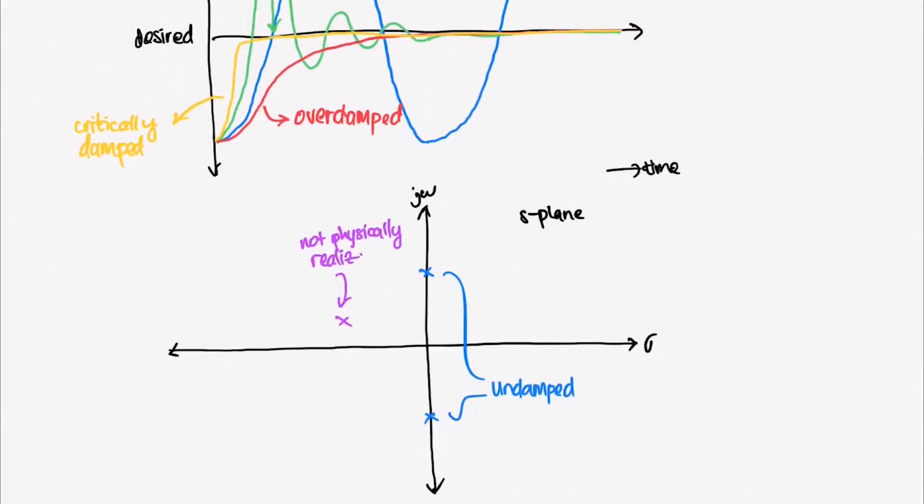Note that for a system to be physically realizable, poles that have imaginary component should have its conjugate. There can't be a pole that has an imaginary component and has no conjugate.